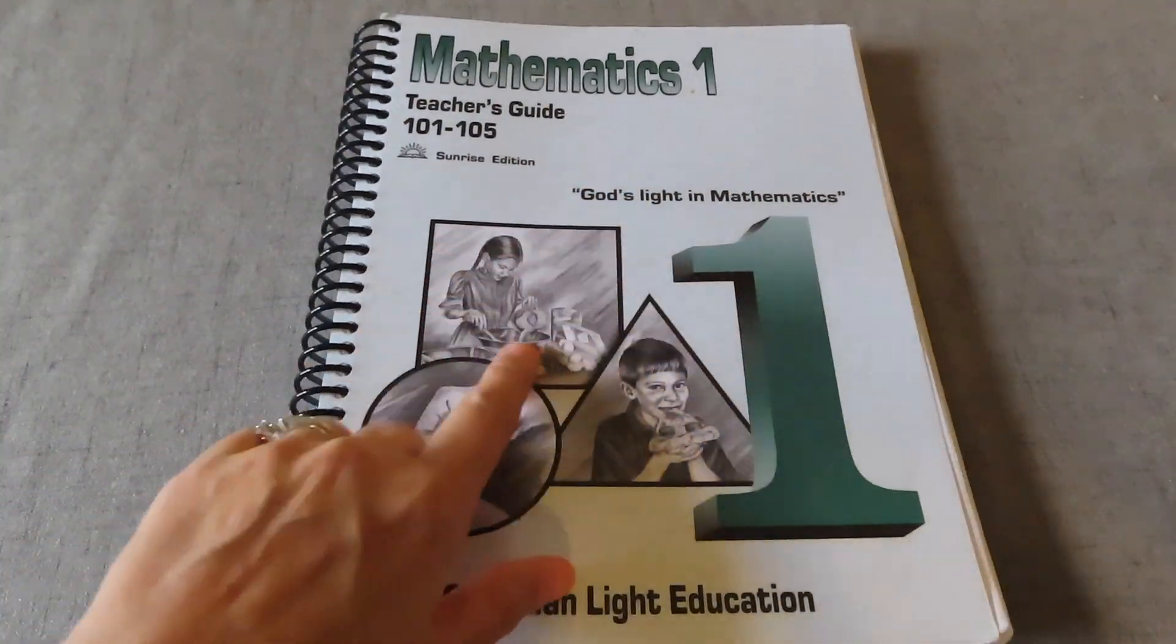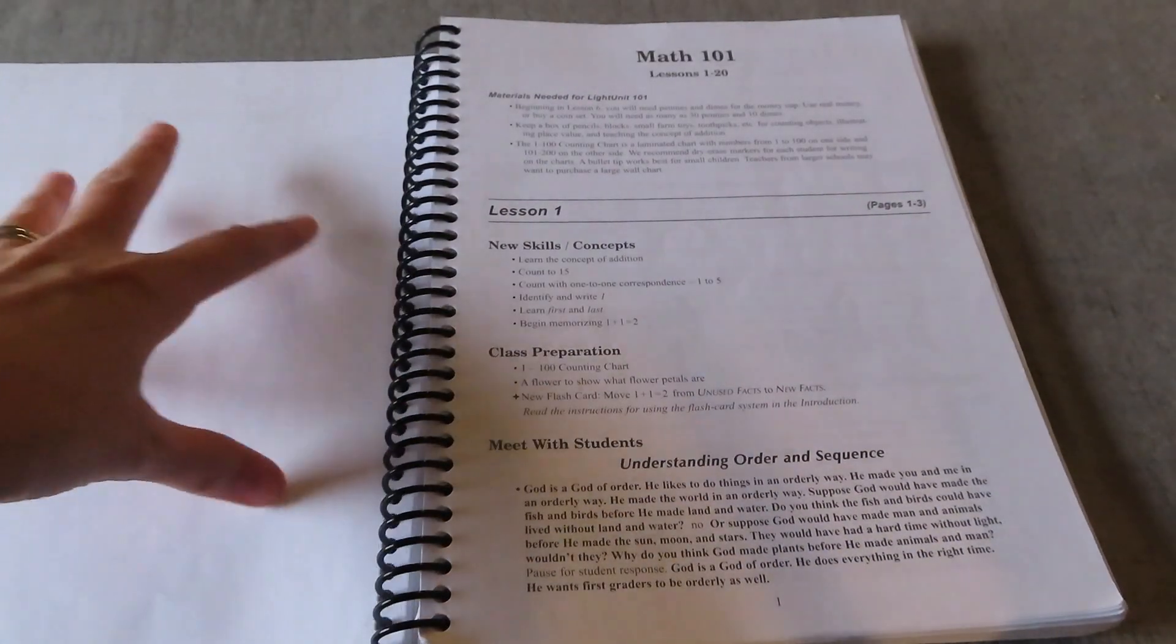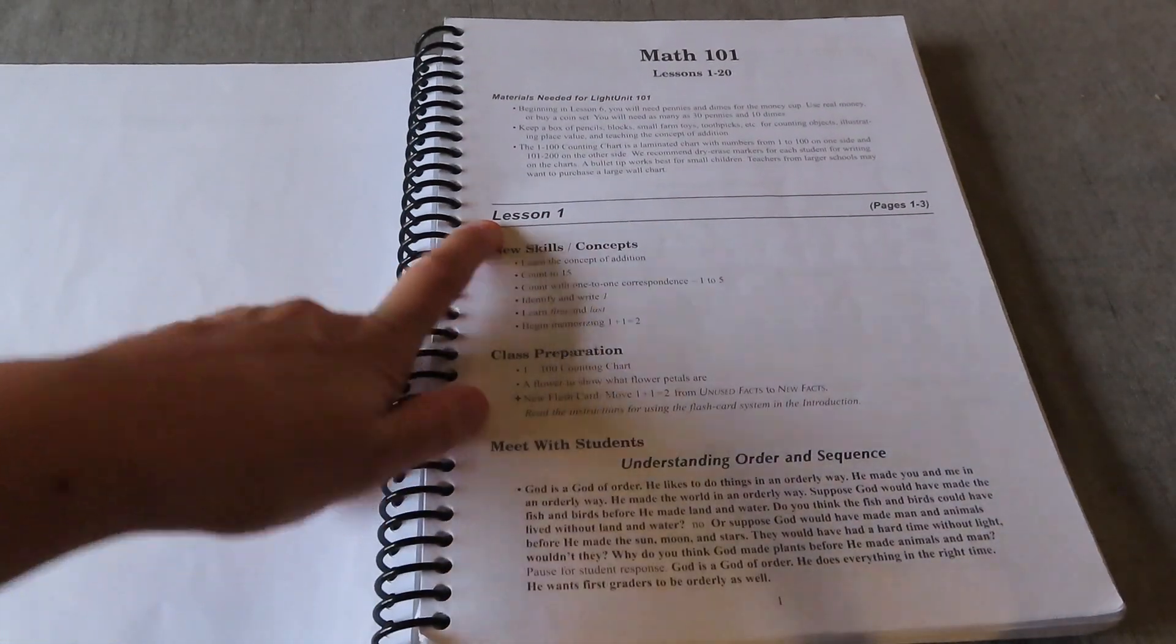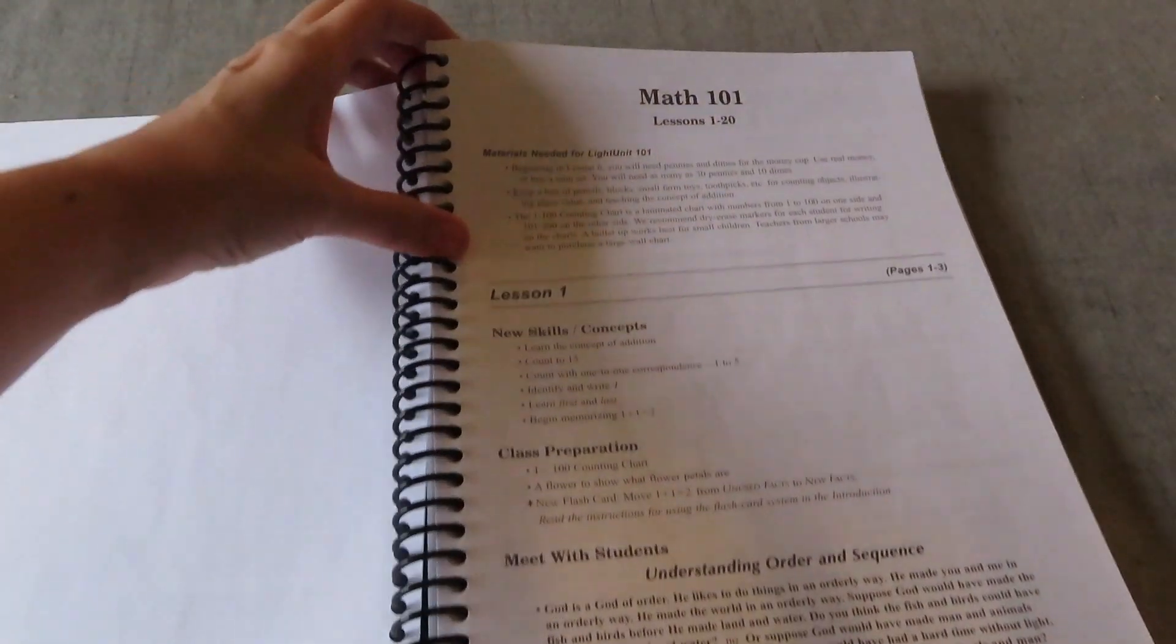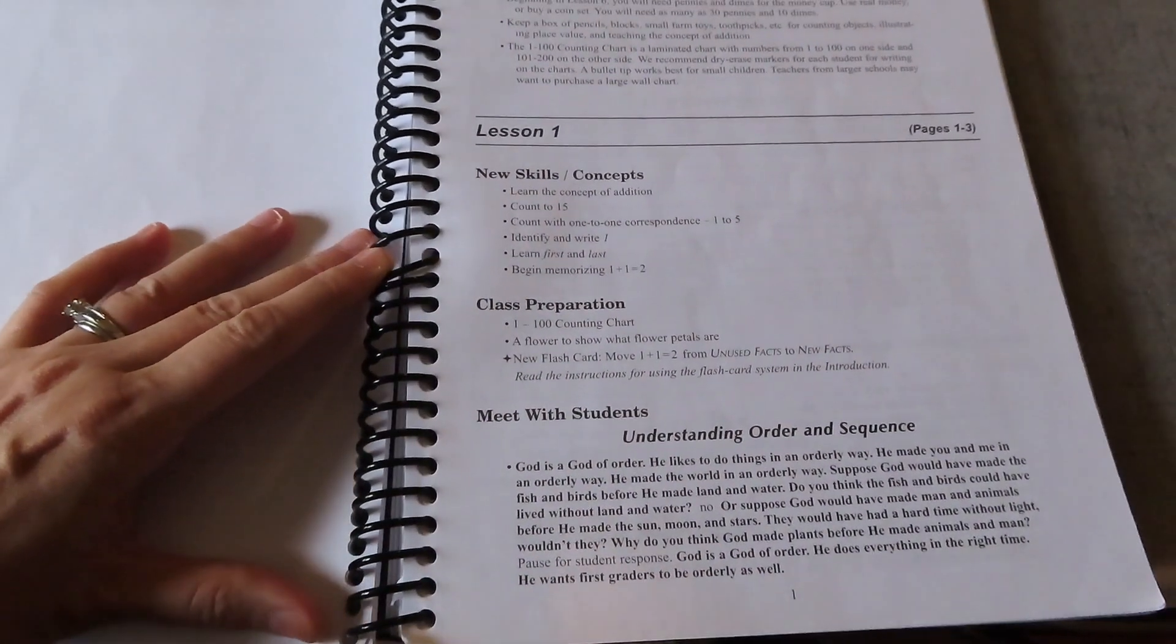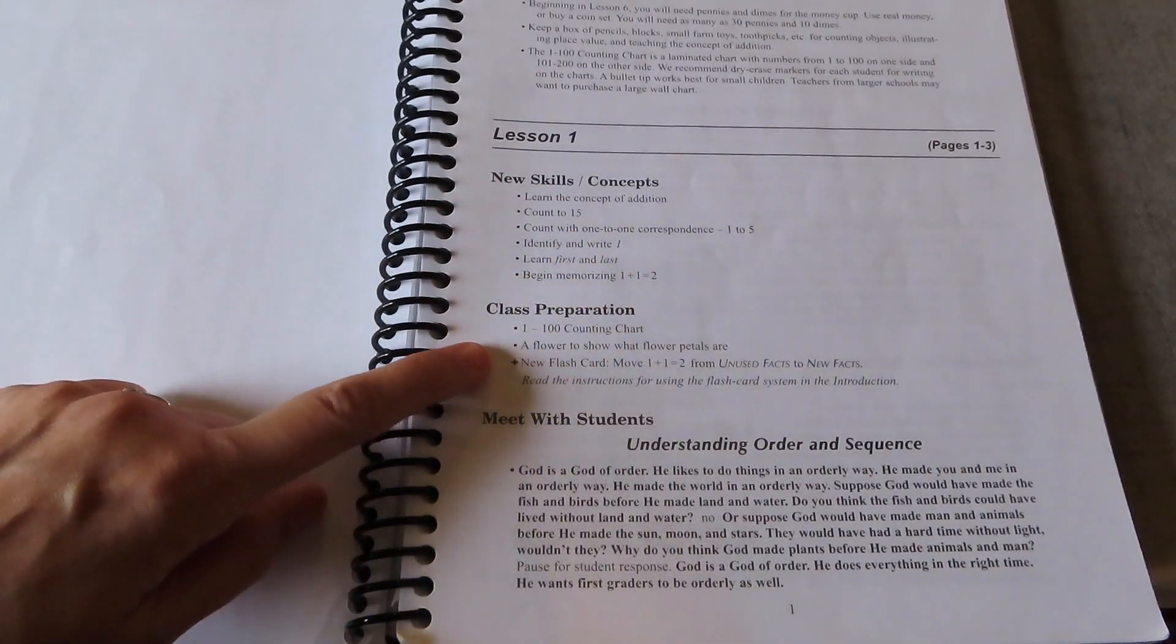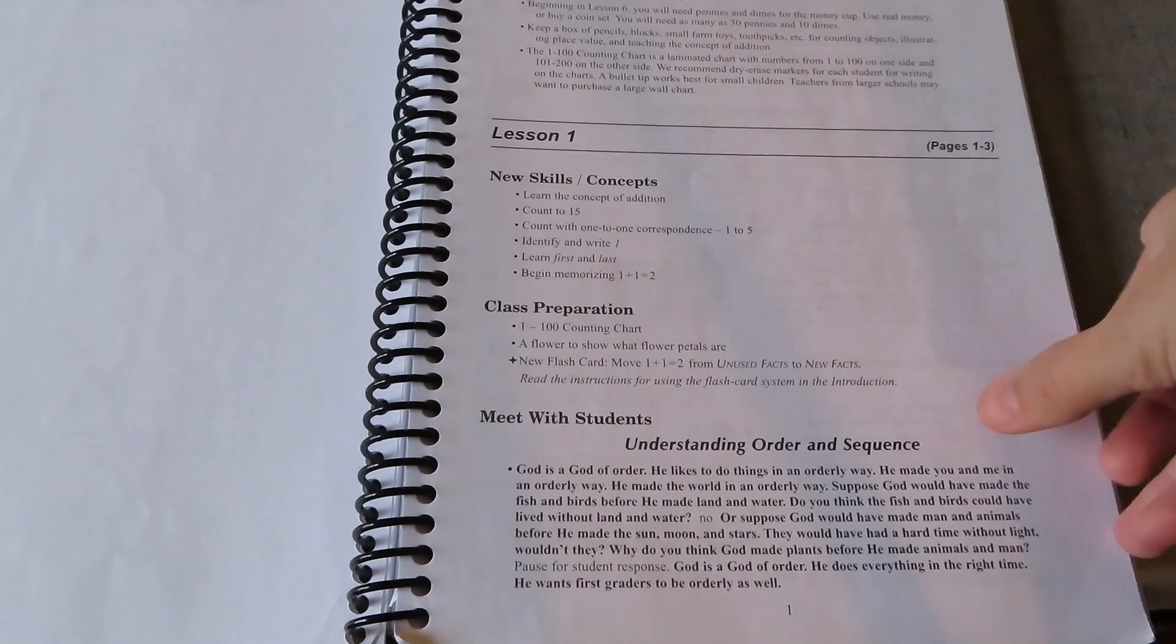This is the teacher's guide. It is very easy to follow. It gives really good information. It has daily schedule ideas. I actually don't use any of those. I just go by we do one lesson a day. For example lesson one has materials that you're going to need for the whole light unit and the skills that they're going to be learning.